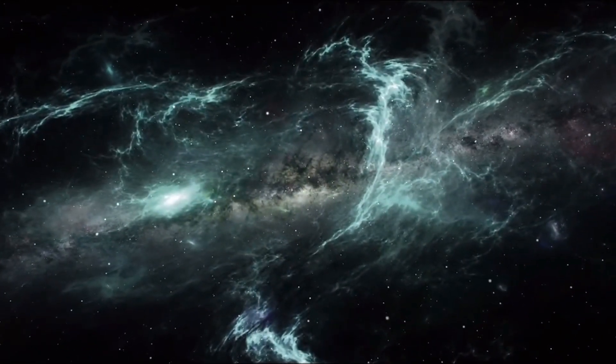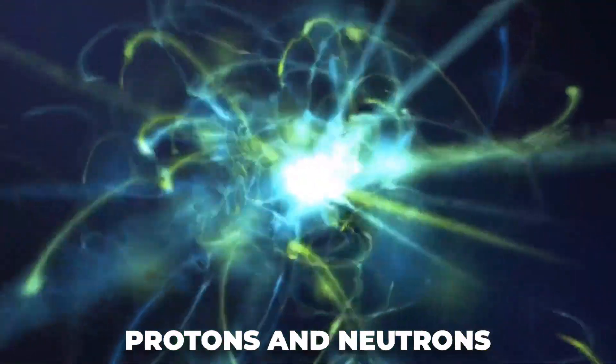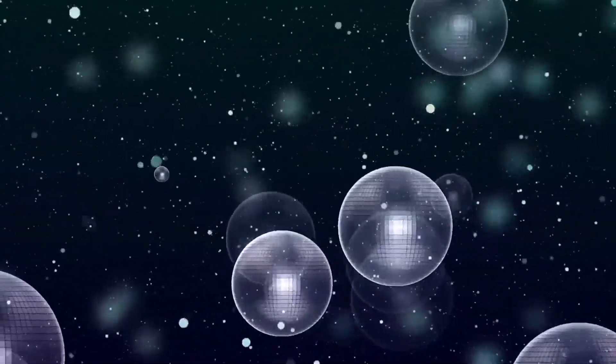Light elements are created within the first three minutes. In fact, as the universe expanded, protons and neutrons collided to make deuterium, which is an isotope of hydrogen. Much of this deuterium is combined to make helium.